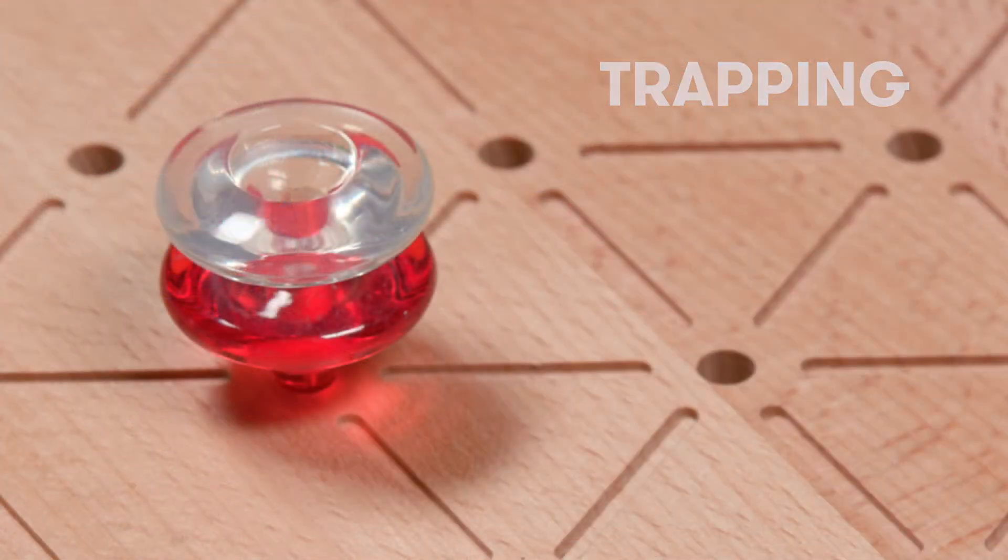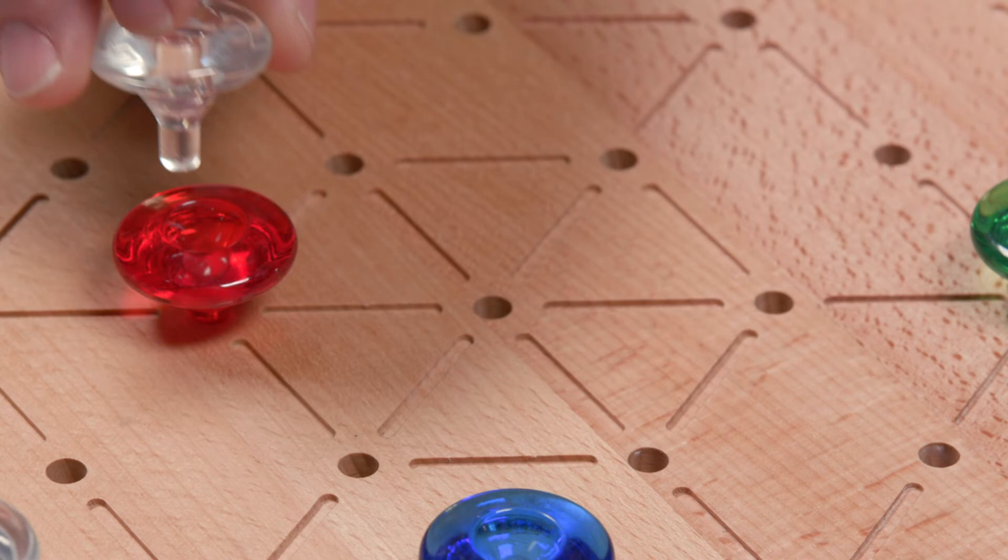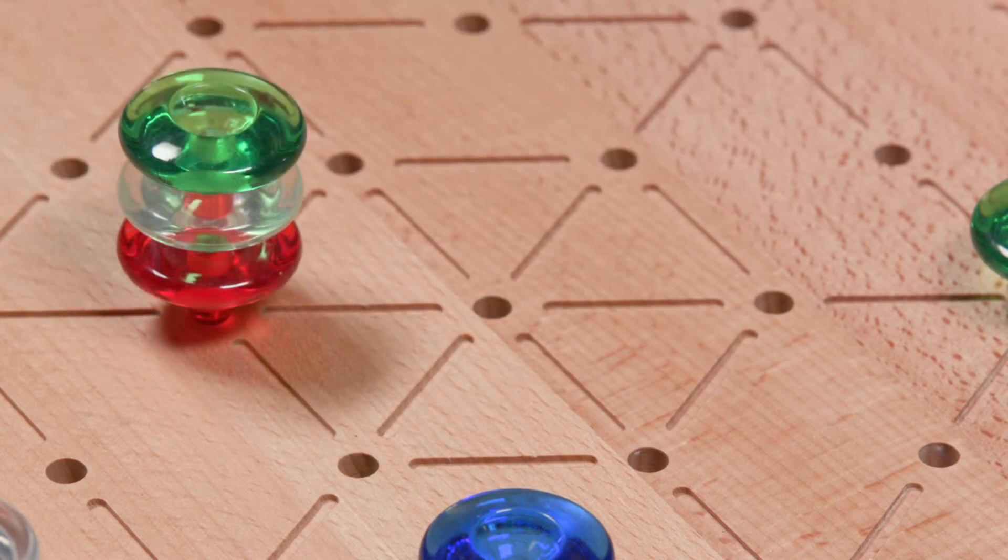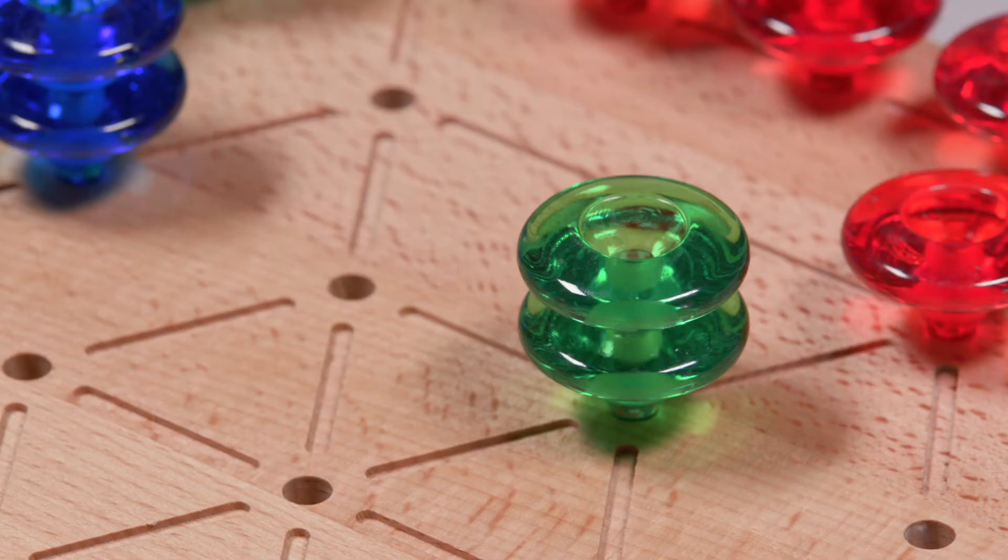You may place your piece on top of a single piece or two different colored pieces to trap them. The piece or pieces underneath cannot move until the trap is removed or changed. Two pieces of the same color stacked in one position create a pair.